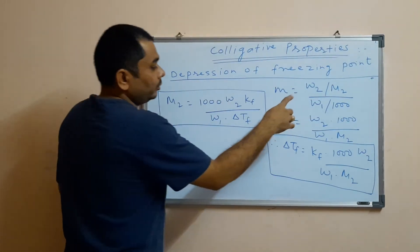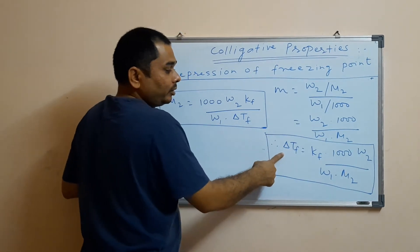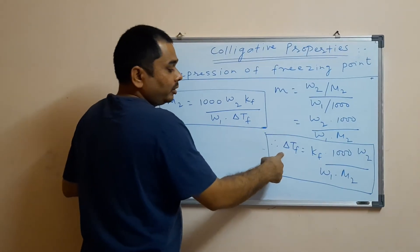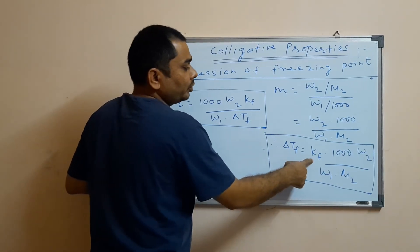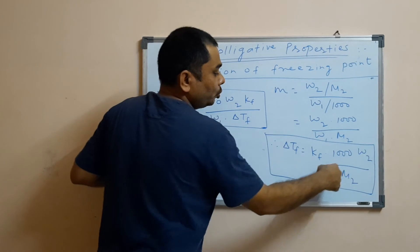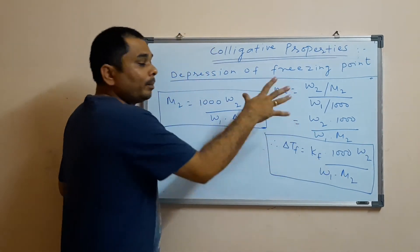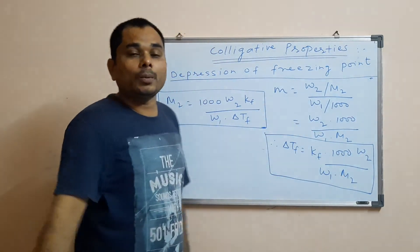The formula is ΔTf = Kf × 1000 × W2 / (W1 × M2). Using this formula, we can determine the molar mass of the solute that has been added.